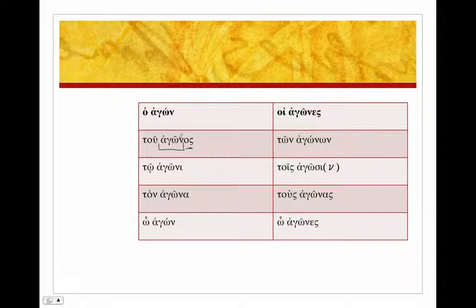We've got a long vowel, so we can put a circumflex over that long vowel: to agonos, there's our stem. And agoni, as you'd expect. Agona. And the vocative in these stems that end in nu is going to be the same as the nominative.